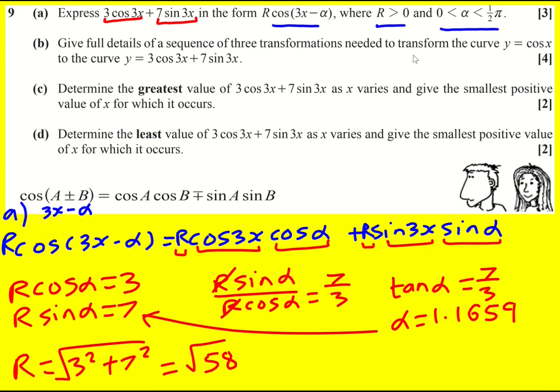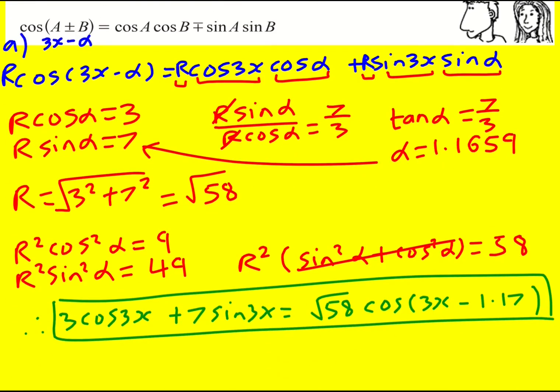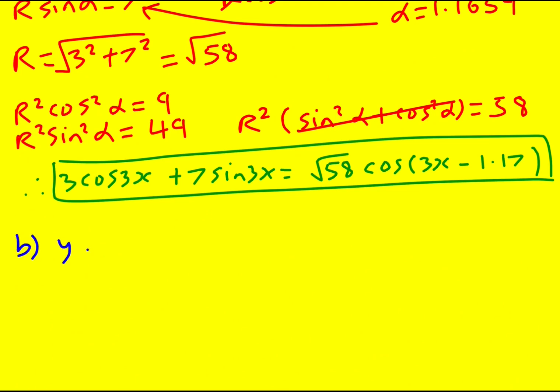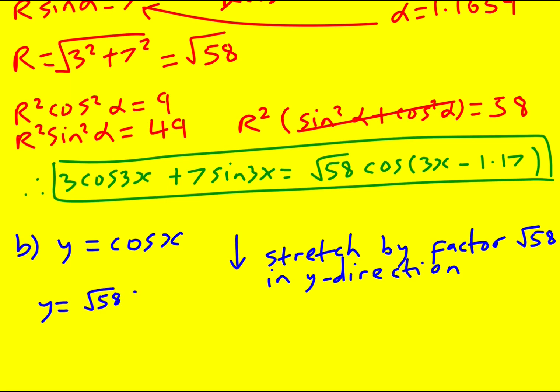Part B says give full details of a sequence of three transformations needed to transform y equals cos x to this thing here. Now remember that is actually the thing on the right. So that is going to be the way to do this question. And the order may matter. Depends - some of the order doesn't matter. So I'm going to start with y equals cos x, and then I'm going to do a stretch by factor root 58 in parallel to the y-axis or in the y direction. Because that's outside, I just feel it's good to get that one out of the way, and that's going to leave us with y equals root 58 cos x.